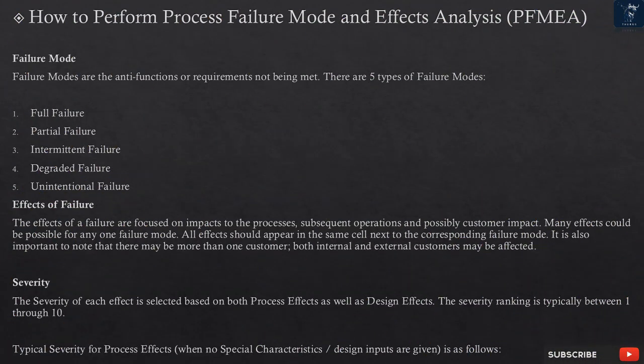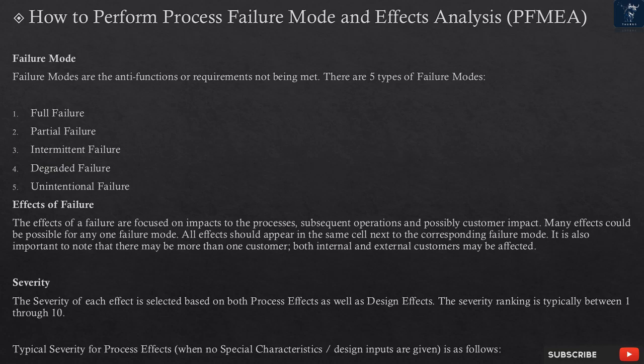Failure Modes: Failure modes are the anti-functions, or requirements not being met. There are five types of failure modes: full failure, partial failure, intermittent failure, degraded failure, and unintentional failure. Effects of Failure: The effects of a failure are focused on impacts to the process's subsequent operations and possibly customer impact. Many effects could be possible for any one failure mode. All effects should appear in the same cell next to the corresponding failure mode. It is also important to note that there may be more than one customer — both internal and external customers may be affected.